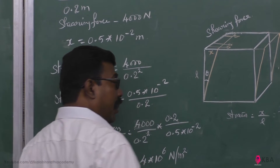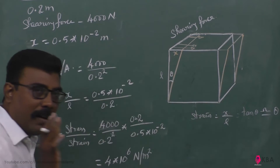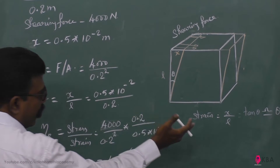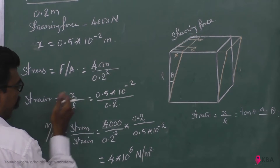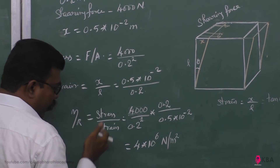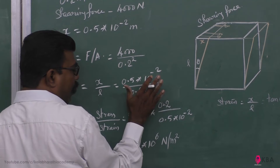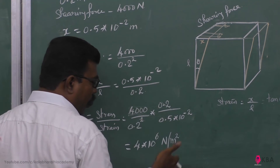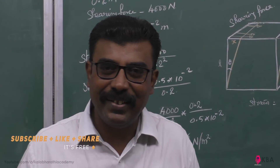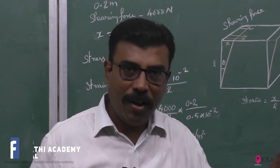In the angle you have θ. So stress divided by strain gives the shear modulus. Calculating, you will get 4 × 10⁶ Newton per meter square. Simple thing — this is the understanding of what you have to do. Thank you.